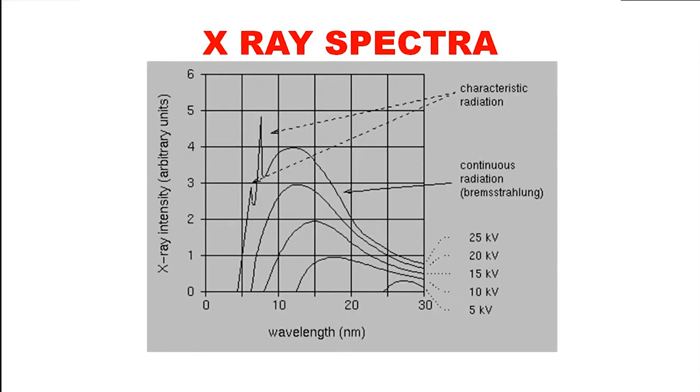Now the figure shows an x-ray spectrum. Just look at the spectrum. You see for different accelerating potentials, nature of the graph is different. See for example, this is the spectrum for an accelerating potential of 5 kilovolt and next comes another graph for 10 kilovolt, etcetera.